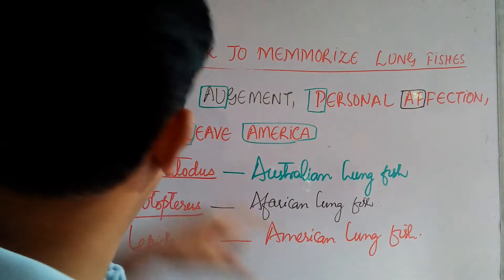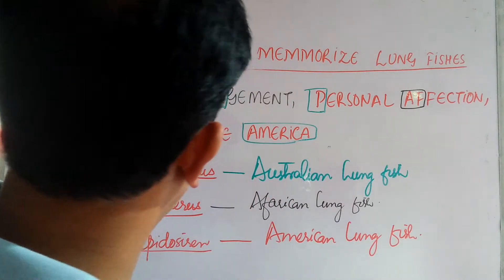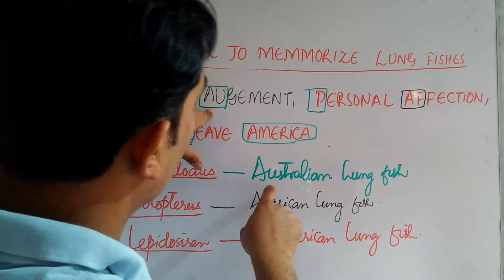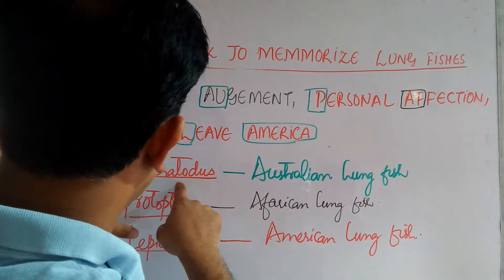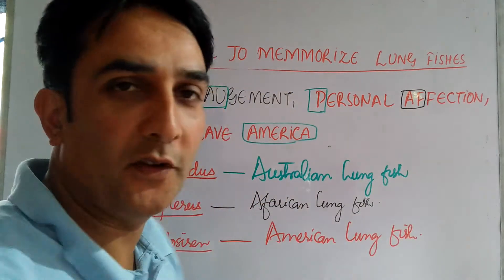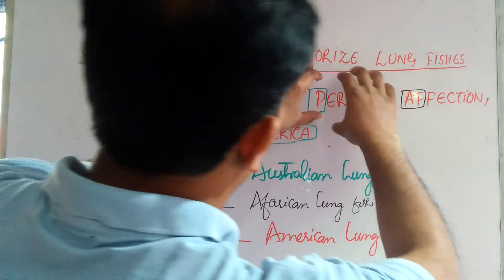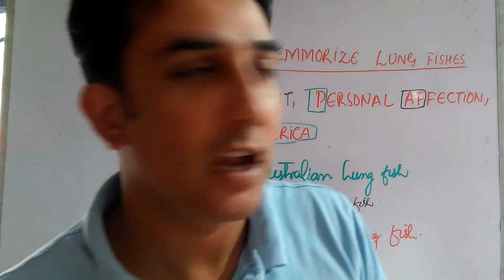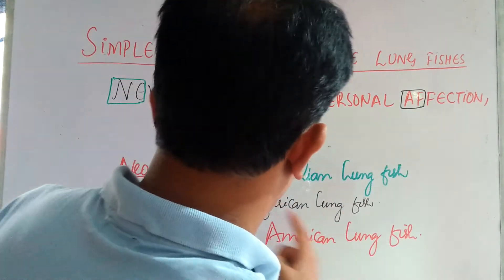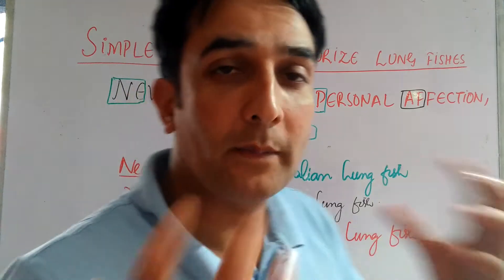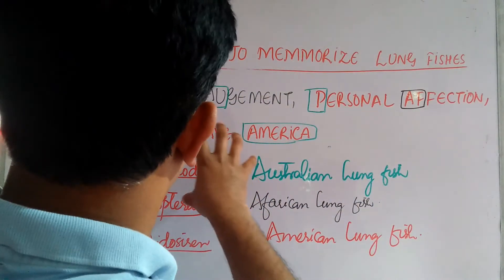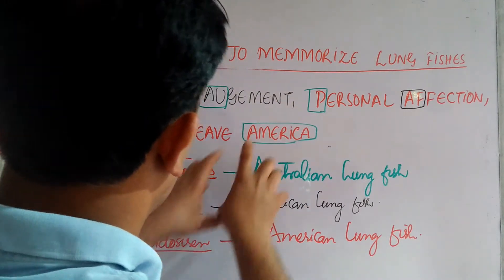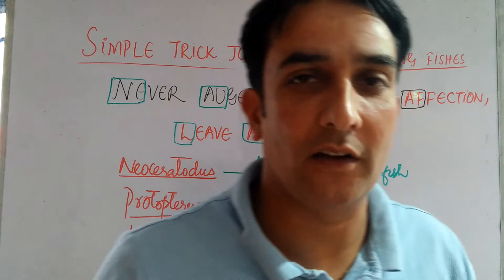Anyways, it is N-E — you have to memorize it is Neoceratodus. Neoceratodus is a type of lung fish, and A-U stands for Australia. So Neoceratodus is the Australian lung fish. Then you will see 'personal' — P stands for Protopterus. Protopterus is also known as the African lung fish. Then there is L, that's 'leave' — L means Lepidosiren, and 'America' means Lepidosiren is the American lung fish.